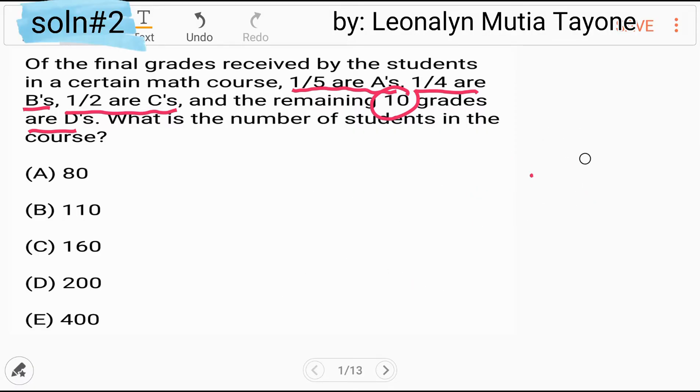Balikan lang natin yung problem. So ang ginawa natin, ina-add natin sila. Yung may grade na A's, B, C, at later yung D. So mayroon tayong 1 fifth, ina-add natin sa 1 fourth, ina-add sa 1 half. Tapos ang least common denominator niya ay 20.